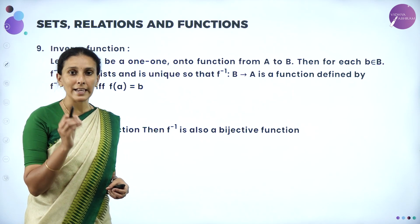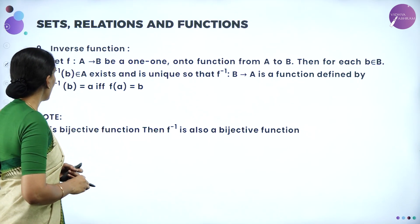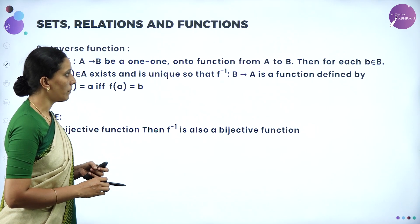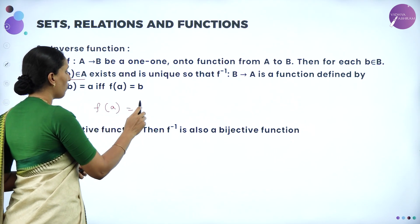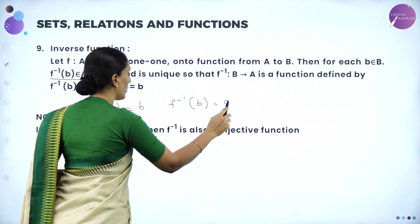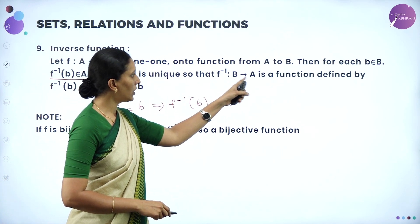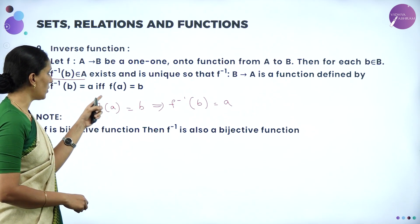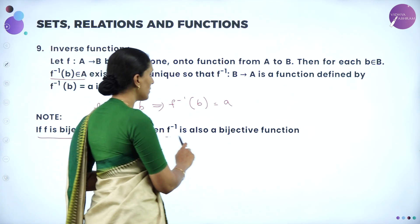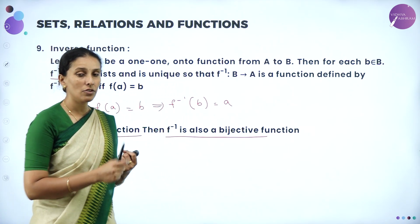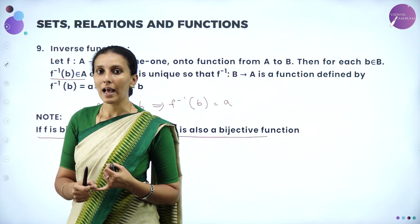Inverse function exists only if the function is bijective — that is, both one-one and onto. If f from A to B is a one-one onto function, then for each b ∈ B, if f(a) = b then we write f⁻¹(b) = a. So f⁻¹ from B to A is a function defined by f⁻¹(b) = a if and only if f(a) = b. If f is a bijective function, then f⁻¹ is also a bijective function. The inverse of a function exists only if f is bijective.